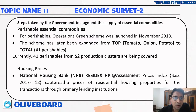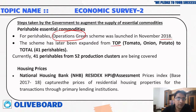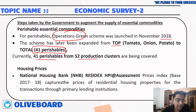Operation Greens, launched in 2018 for perishable essential commodities, has been expanded from TOP — tomato, onion, potato — to a total of 41 perishable commodities, with 42 production clusters.